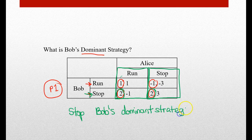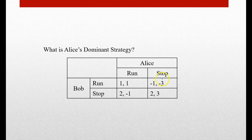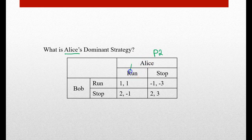Stop is going to be Bob's dominant strategy. The cool thing about this is if you ever figure out what your dominant strategy should be, you can always go with that and it's always going to be your best choice. You don't even have to think about what the other player is going to do — no need for poker sunglasses here. Now let's look at another example, but this time we want to figure out Alice's dominant strategy.